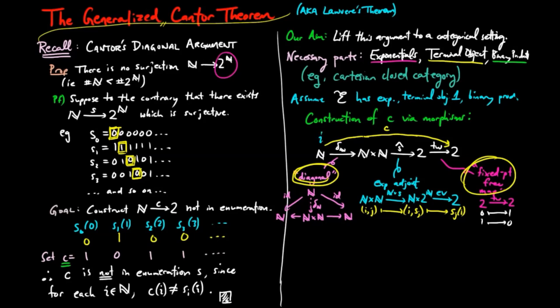So looking at this, we have the diagonal map taking i to the pair i-i, and then s hat taking this to s sub i, evaluated at i. And the twist map then exchanges this to its twos complement. So zeros swap with ones.